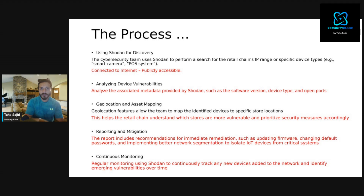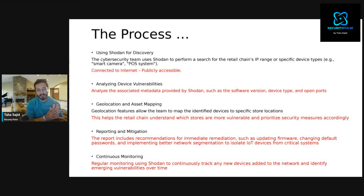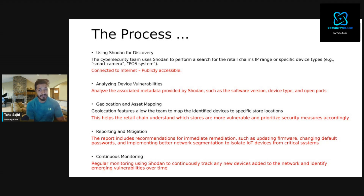Once you find a device, you can analyze vulnerabilities — CVEs that are discoverable, open ports, attack vectors, and potential exploits. You'll see all sorts of data. Additionally, Shodan provides geolocation and asset mapping, which helps the retail chain understand which stores are more vulnerable. When you find those IoT devices, you can go directly to their location and get geolocation data, which is very useful.